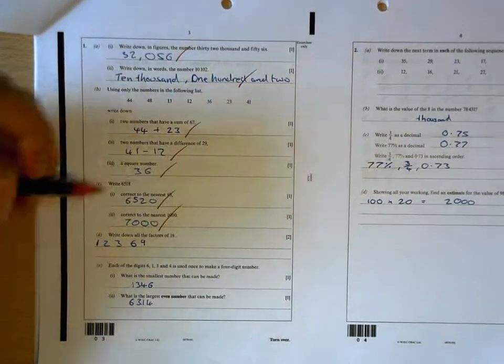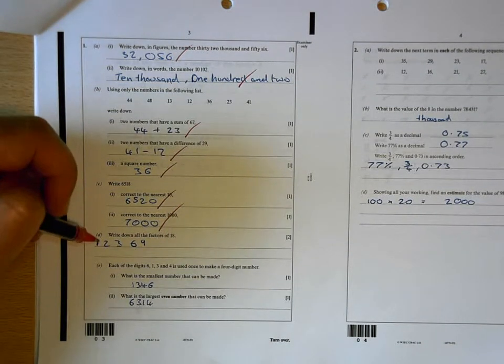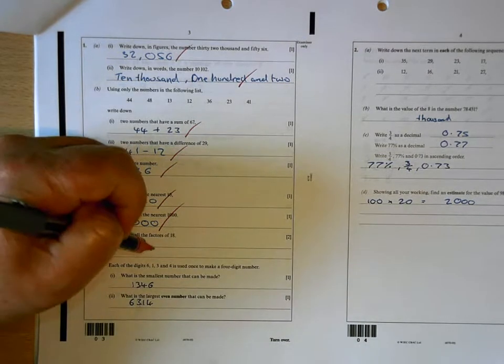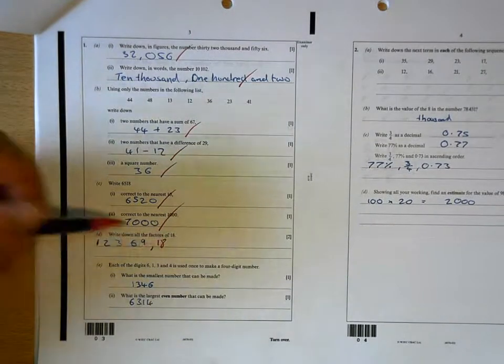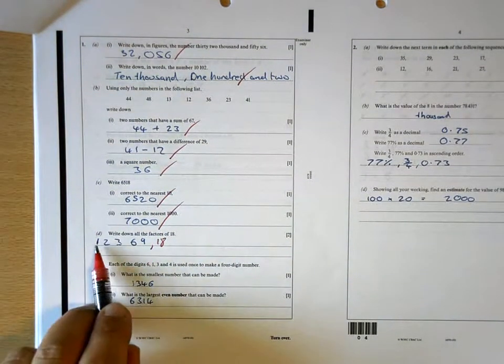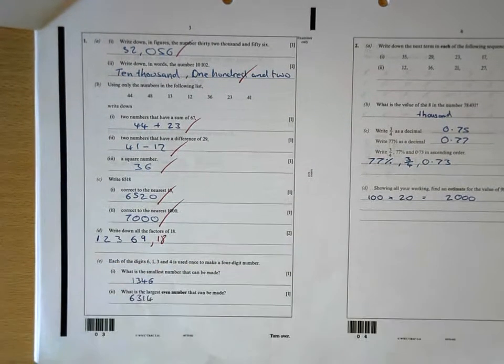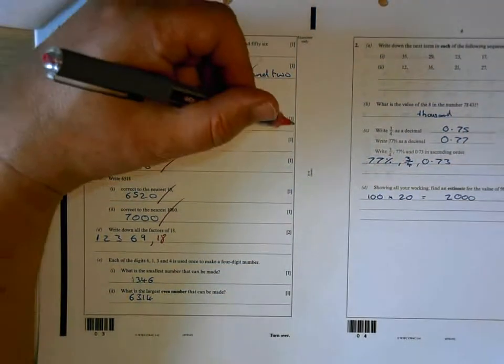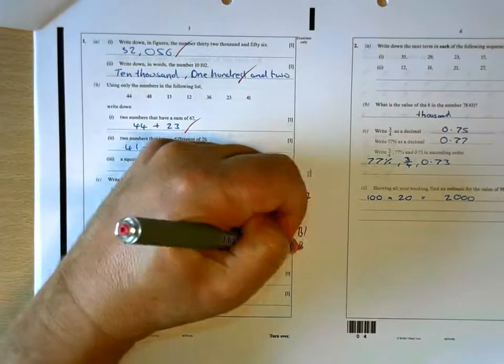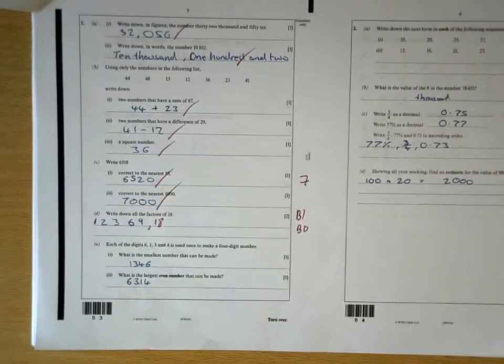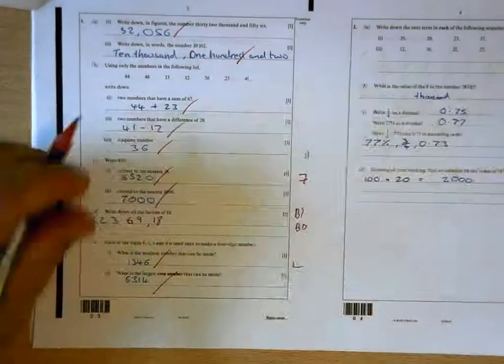Good. 24 and 23, 41, 12, 36. But you haven't listed all the factors there. You are missing 18, which also goes into itself. One, so they'll pair off. You have 1 and 18, 2 and 9, 3 and 6. So there's one missing there. You'll only get one of the two marks for that because you've missed one out. 1346 is correct, 6314 is correct.